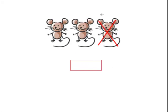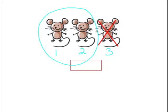How many mice do you see? Let's count. One, two, three. Three mice. But if we take away one, how many are we left with? Good, we are left with two mice.